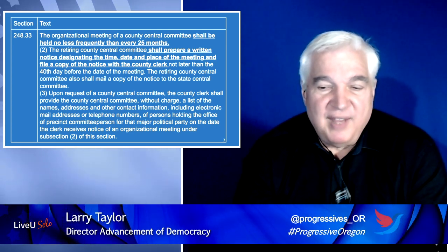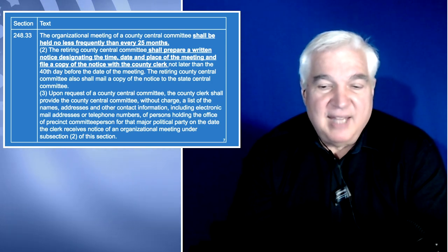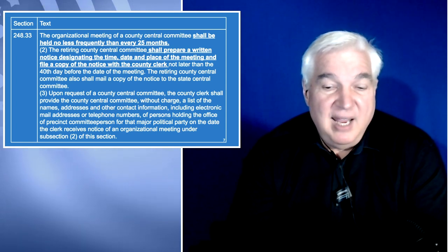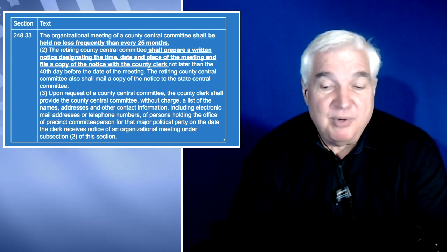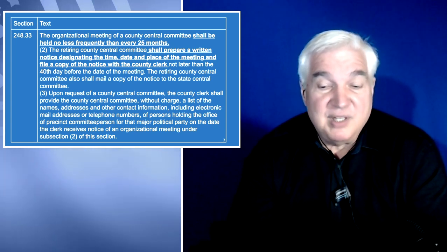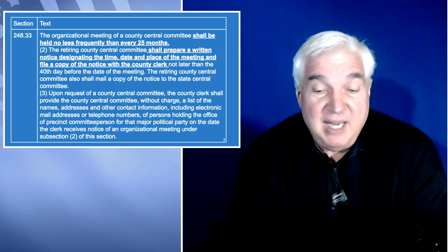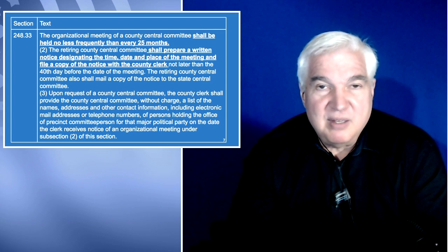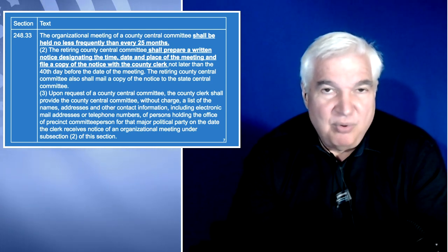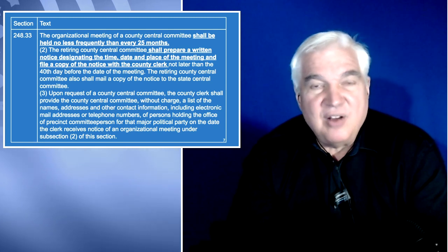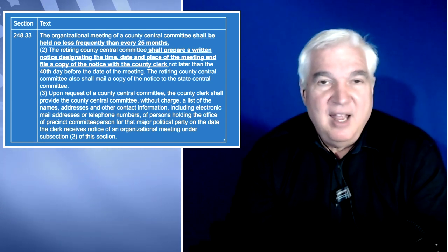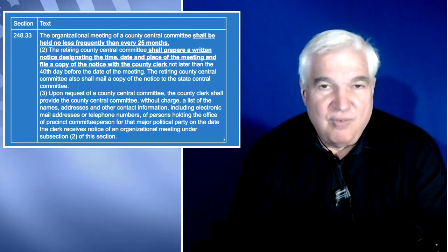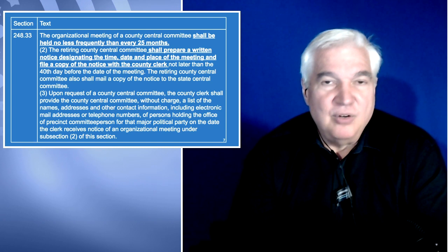Upon request of a county central committee, the county clerk shall provide the committee without charge a list of the names, addresses, and other contact information, including email addresses or telephone numbers, of persons holding the office of precinct committee person for that major political party on the date the clerk receives notice of an organizational meeting. So even if it's well after the election of PCPs, with appointments tracked through the county clerk, the county clerk must give the central committee a list of all eligible voters. There's no ambiguity over who is eligible to vote and who should be notified.